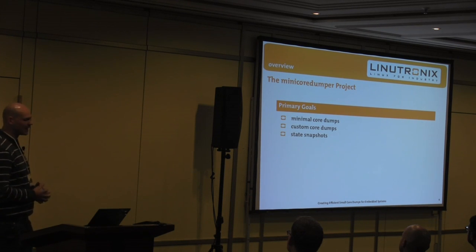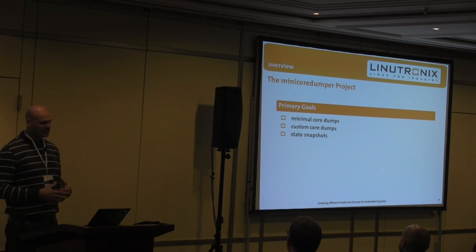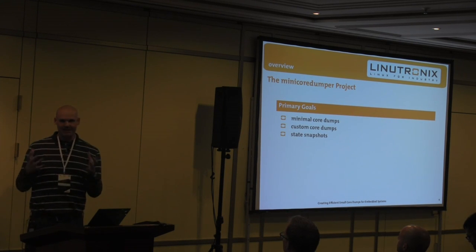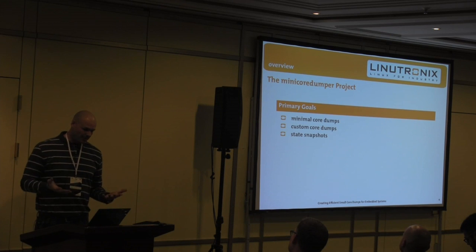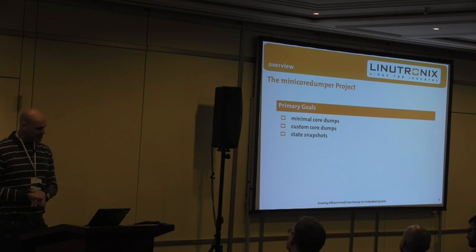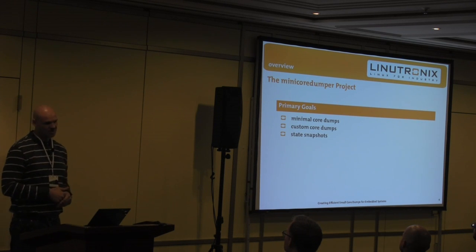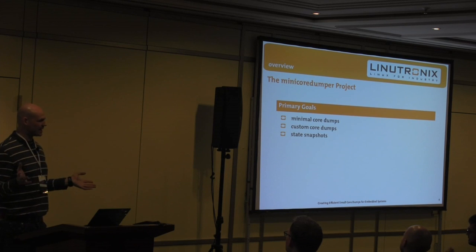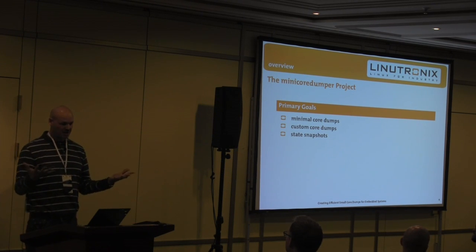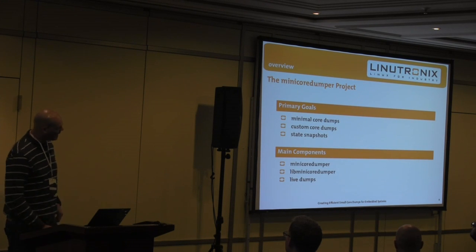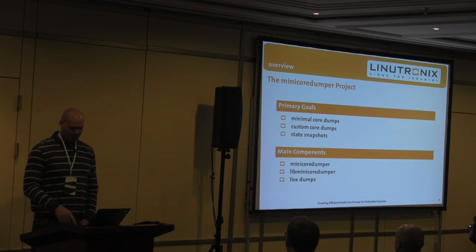The mini core dump project really would like to see core dumps being used in real small embedded devices because there is a lot of value in those core dumps. If we can get the core dump file size down to something practical for embedded devices, it becomes extremely attractive. The goals of the mini core dump project are: we want very small core dumps, we want customized core dumps where developers can specify exactly what they want, and it would also be nice to support staged snapshots — having information from all ten cooperating applications at the time of a crash. These are implemented in three main components.